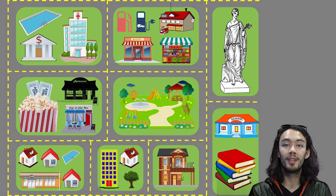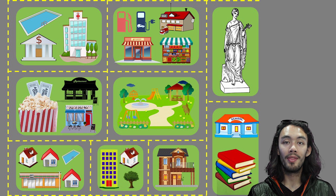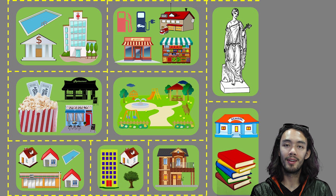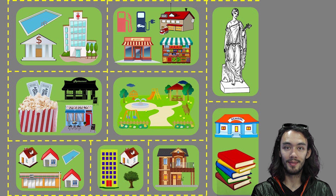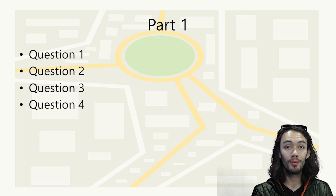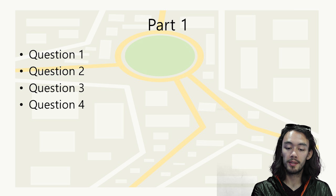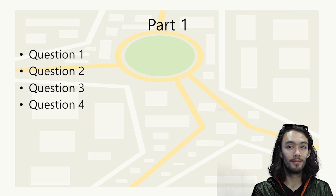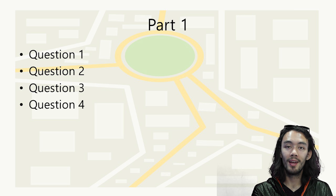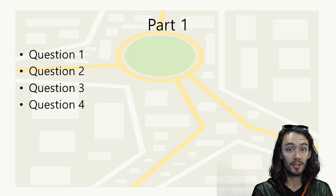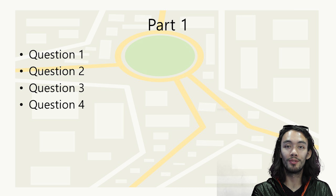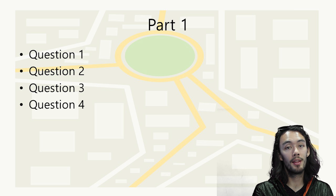I am going to give you questions and you must answer on the online quiz. Part one. Question one: what buildings are next to the hospital? Question two: what building is between the museum and the library? Question three: what is across the road from the cafe? And question four: where is the park?